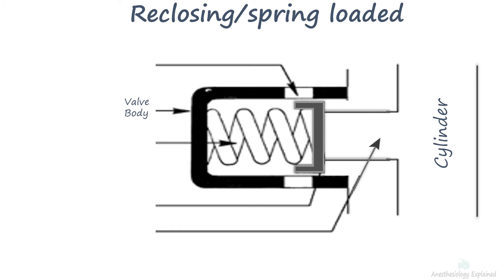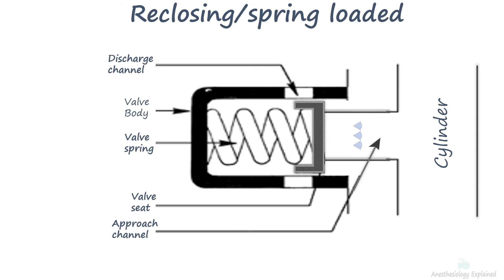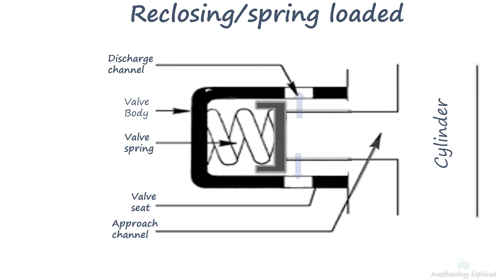At normal operational pressure, the spring within the pressure relief valve exerts firm pressure that forces the seat against the approach channel, effectively closing off the discharge channel. However, when the pressure within the cylinder begins to rise — often due to high temperatures or overfilling — the flow of high-pressure gas exerts force against the seat, compressing the spring and causing the seat to move away from the approach channel. This opens the discharge channel, enabling excess gas to vent safely into the atmosphere. Once pressure is reduced to a safe level, the spring's restorative force pushes the seat back, firmly closing the approach channel once more.